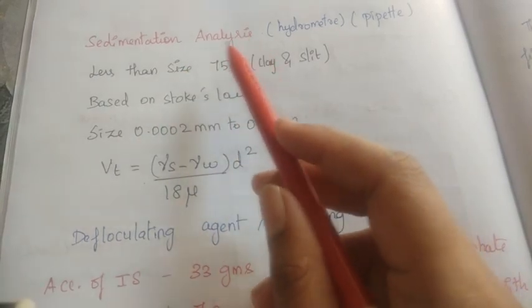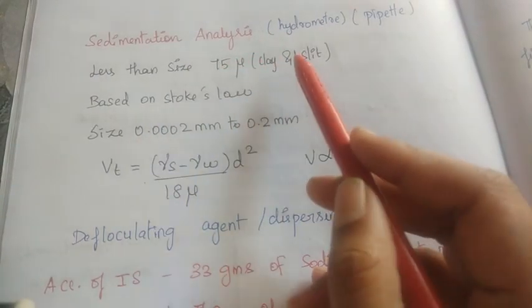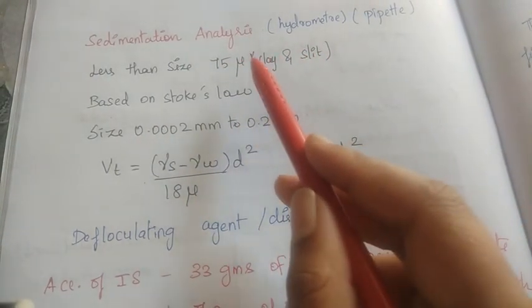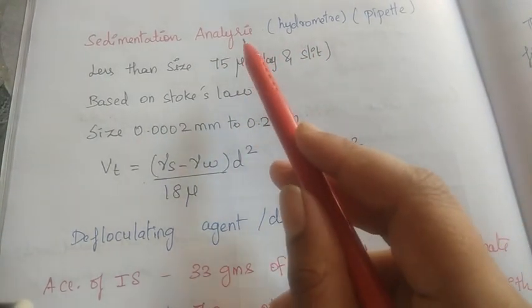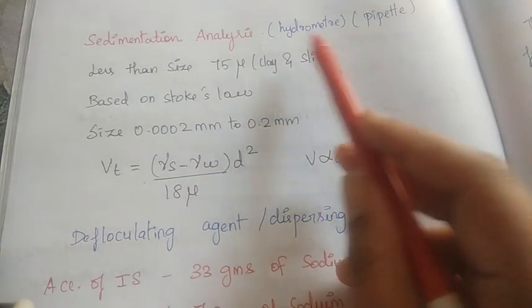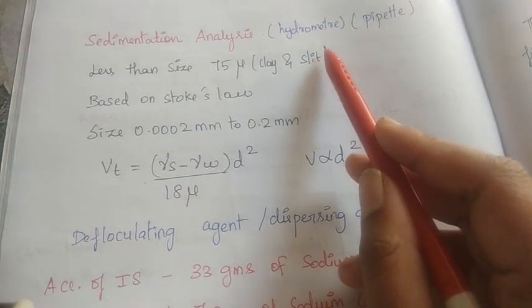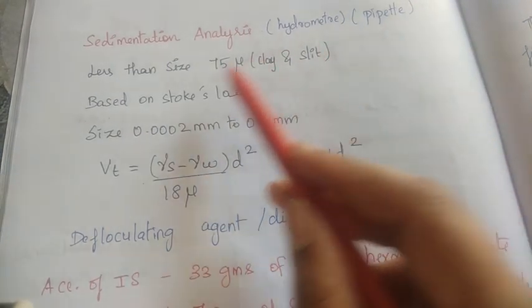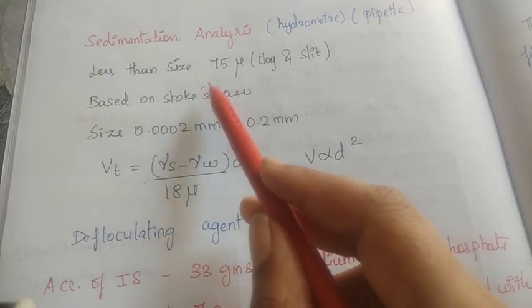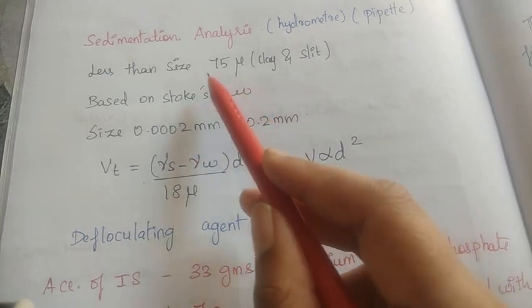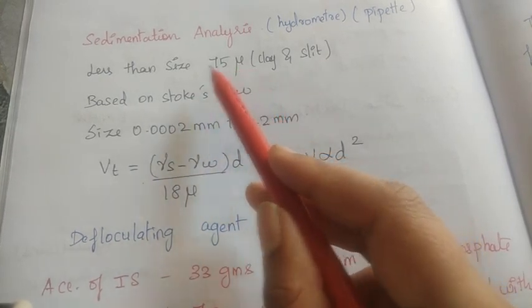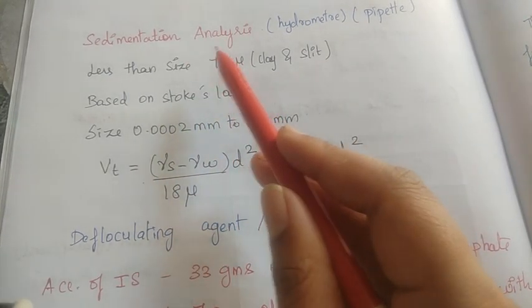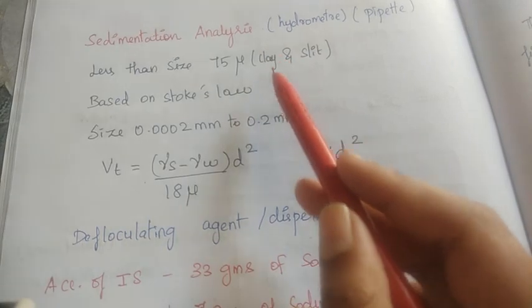What is sedimentation analysis? Sand, clay and silt — we have to do sedimentation analysis. That means we have to do hydrometer analysis. The grain size for sedimentation analysis is less than 75 microns.